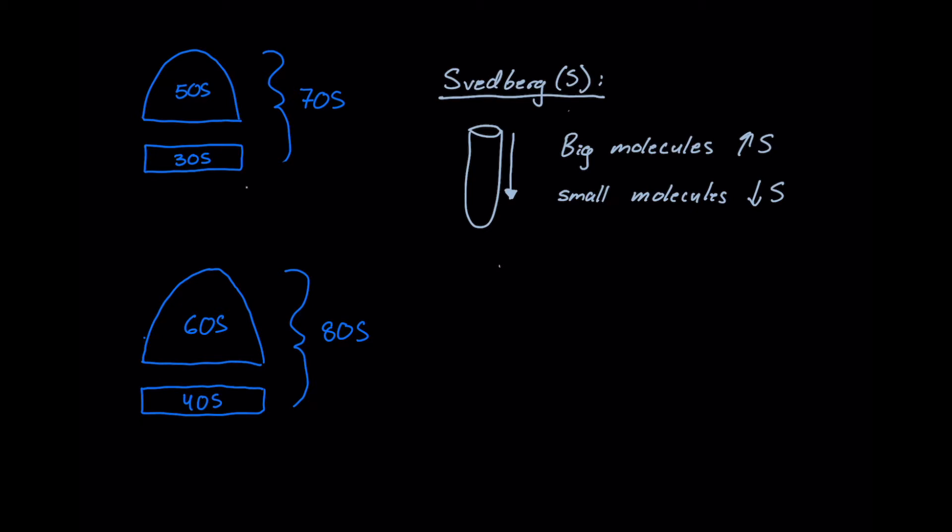But what we need to know for the MCAT are the ribosome subunit weights of two different ribosomes. The first of which being a prokaryotic ribosome, which is going to be a little bit smaller than a eukaryotic ribosome. That should make sense because your typical prokaryote might be something like a bacterium and they're a lot smaller than a eukaryote.